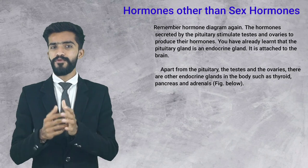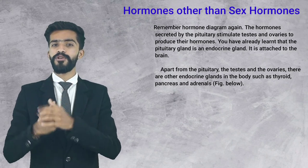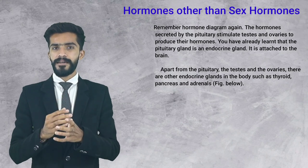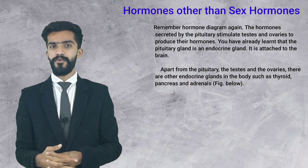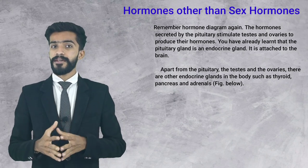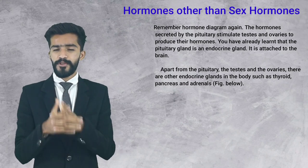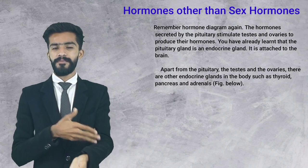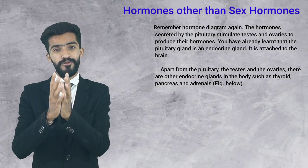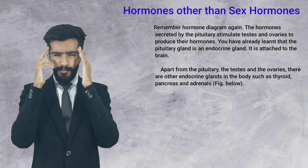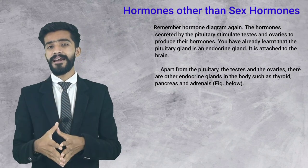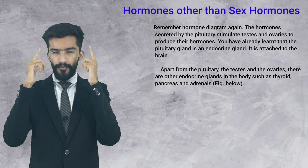The pituitary gland is an endocrine gland that stimulates the testes and ovaries to produce eggs and hormones. You have already learned that the pituitary gland is an endocrine gland. It is attached to the brain.